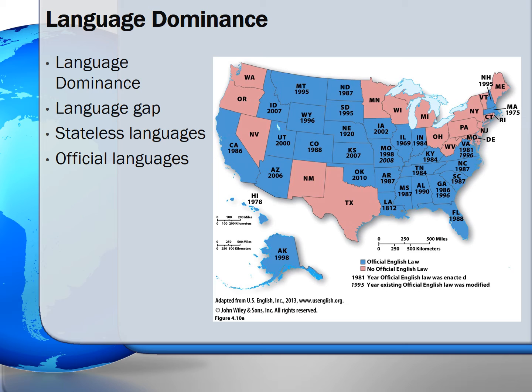An official language is one that a state formally designates for use in its political, legal, and administrative affairs. Although the United States does not have an official language, some states, as shown in the map, have passed laws making English the official language of the state.